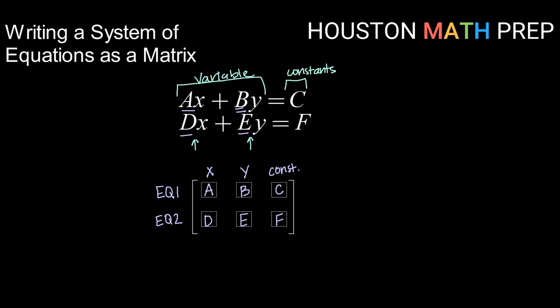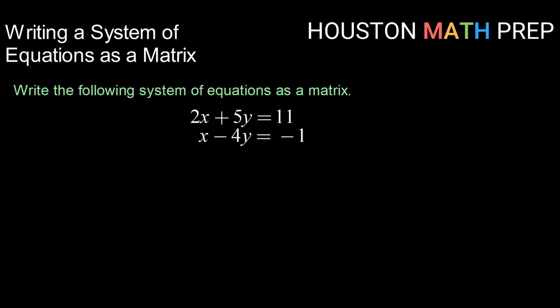Let's take a look at some examples. Here we have the system of equations 2x plus 5y equals 11 and x minus 4y equals negative 1. We're going to write this system as a matrix. The shape of the matrix is determined by counting how many equations we have — we have two equations, so that's the number of rows we need. Then count the columns: we have our x column, our y column, and our constant column, so we need three columns.